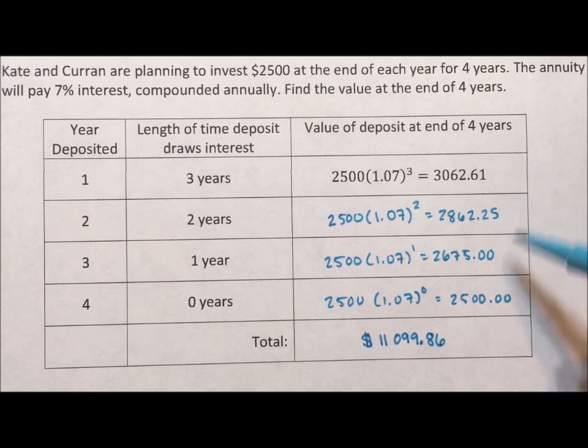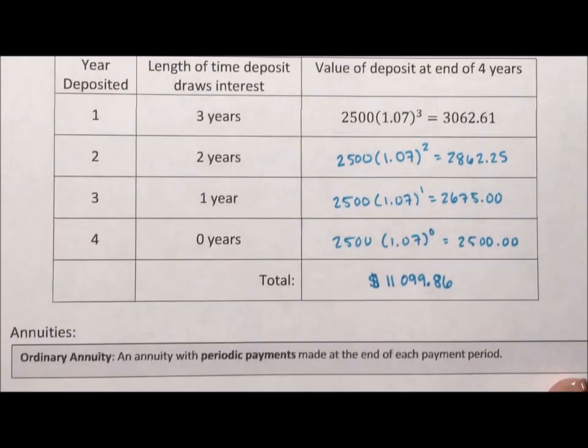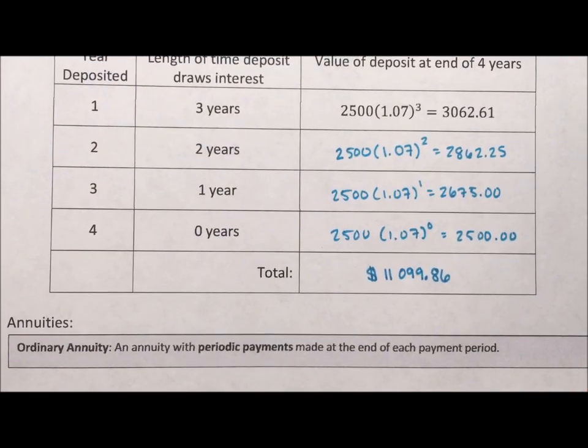Now this was just four years, once a year for calculations, and that was pretty tedious. And so what we need to do is we need to find a way to not have to do this with a table because what if we deposited weekly for 10 years? That would be a really big table. So first of all, an ordinary annuity is something where the periodic payment made at the end of each period.